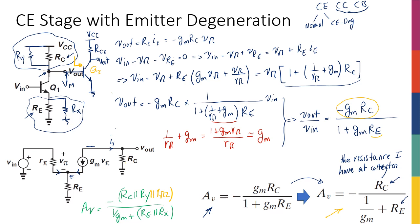The key takeaway is how the gain of a common emitter with emitter degeneration is calculated and how it differs from normal common emitter. In terms of gain we're losing something: although having Re is good for biasing, it's not a good idea from a gain perspective unless necessary. The gain is either -gm * Rc / (1 + gm * Re) or equivalently -Rc / (1/gm + Re).